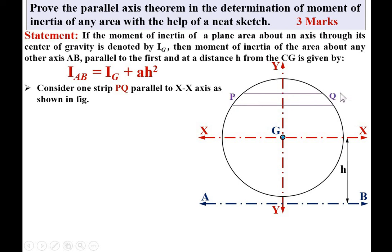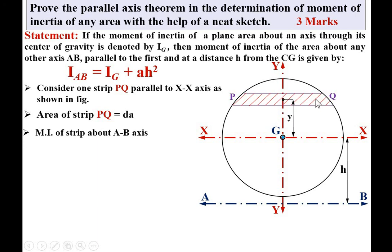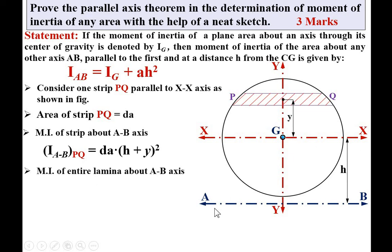Now consider one elemental strip PQ that is parallel to the XX axis as shown in the figure. I draw the hash pattern inside the elemental strip PQ. The CG of the elemental strip PQ is at a distance y from the XX axis. The area of the strip PQ is equal to dA, because it is a very small value. The moment of inertia of the strip PQ about AB is area multiplied by distance squared — the distance from the strip's CG to AB is (y + h). So the moment of inertia of the strip PQ about axis AB is dA·(y + h)².